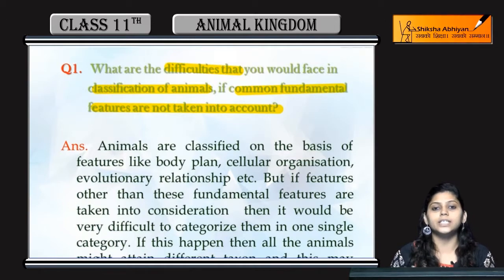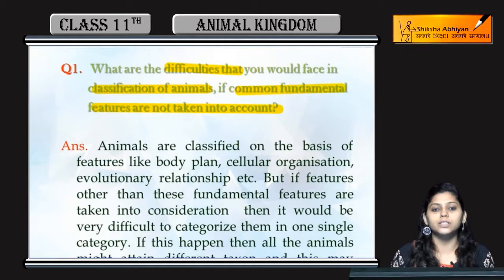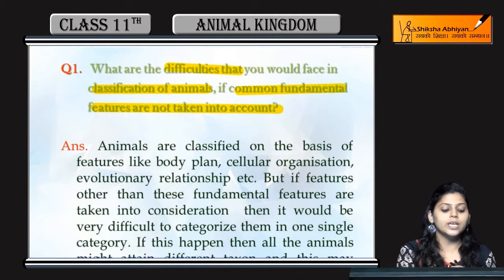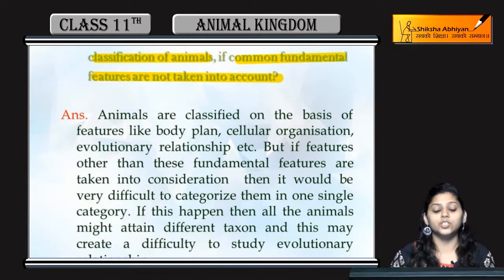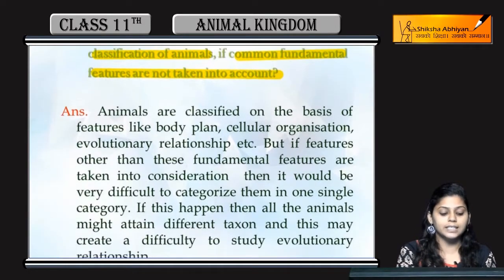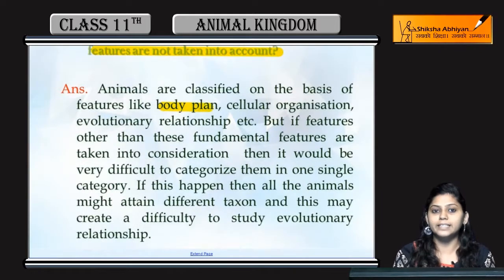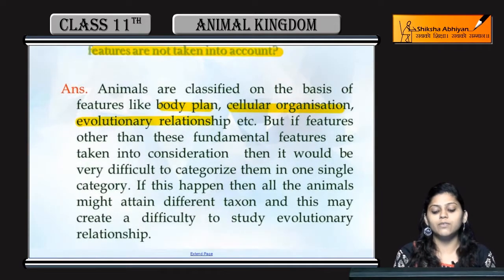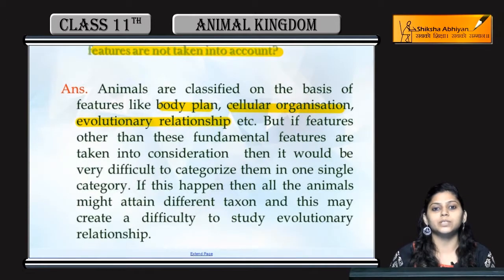हमें क्या difficulties होंगी किसी भी animal को classify करने के लिए, अगर जो fundamental features हम use करते हैं उसके अलावा कोई और features हम consider करें तो। सबसे पहले तो क्या fundamental features हम consider करते हैं — उसका body plan कैसा है, उसकी cellular organization कैसी है, या फिर evolutionary relationship कैसा है बाकी animals के classification में।